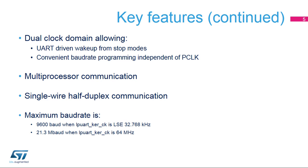The multiprocessor mode allows the LP UART to remain idle when not addressed. In addition to full duplex communication, it also supports single wire half duplex mode. The maximum baud rate is 9600 baud when the clock source is the LSE, and 21.3 megabaud when it is the sysclock.